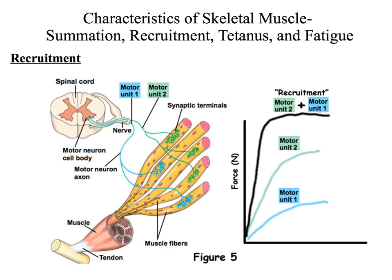Looking at this graphically, motor unit number one innervates two muscle fibers and motor unit number two innervates three muscle fibers. When motor unit number one is stimulated, it results in a particular force of contraction. When motor unit number two is stimulated, it too produces a certain force. But when we stimulate both motor unit number one and motor unit number two together, we get a larger force of contraction.